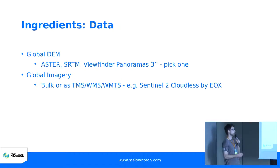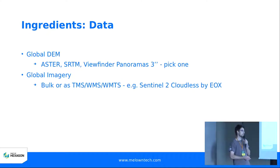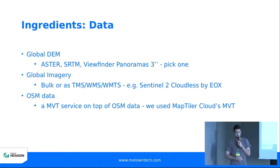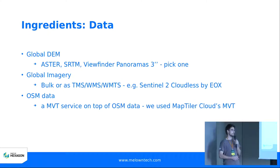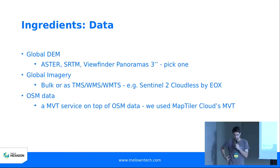We'll need global imagery. With VTS Geospatial you can use bulk imagery locally or you can use imagery provided by TMS, WMS, or WMTS. Here we used the Sentinel-2 Cloudless bulk imagery by EOX. And of course we will need the OSM data — specifically an MVT service on top of OSM data. We used the MapTiler MVT service from MapTiler Cloud.